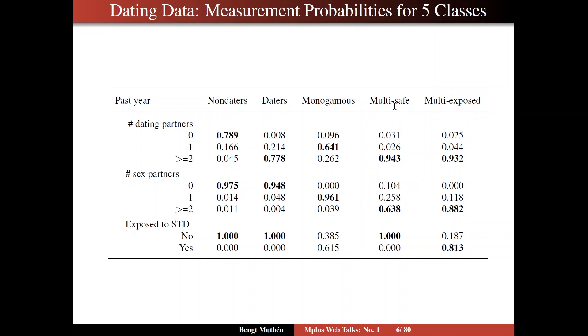Multi-partner safe has at least two partners with high probability, at least two sexual partners with high probability, but not exposed to STD. So that's where the safe part of that name comes from. Multi-exposed has the same pattern of probabilities for the first two items, but has an elevated probability for being exposed to sexually transmitted diseases.